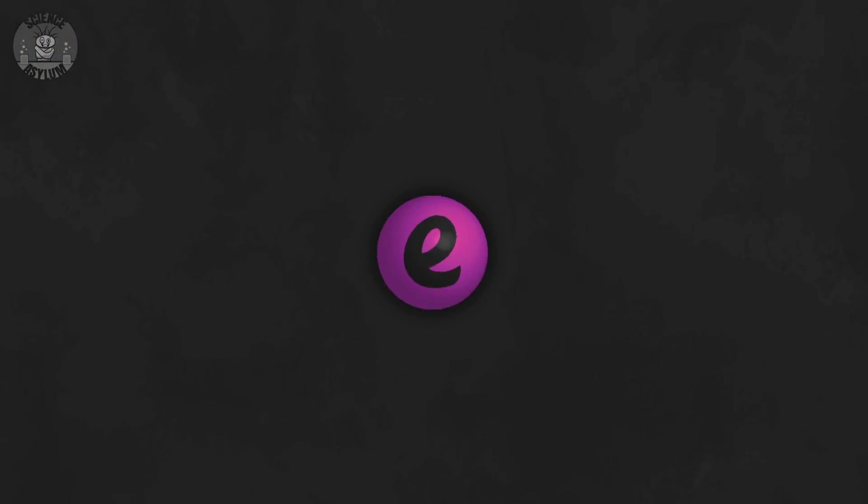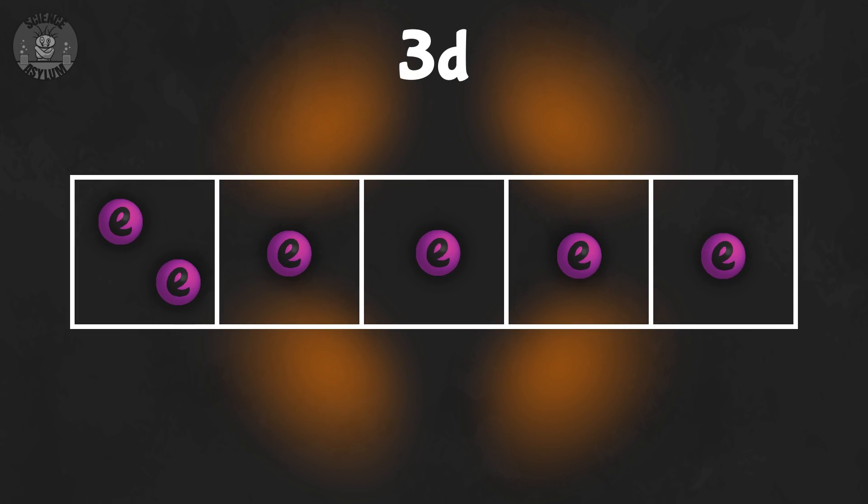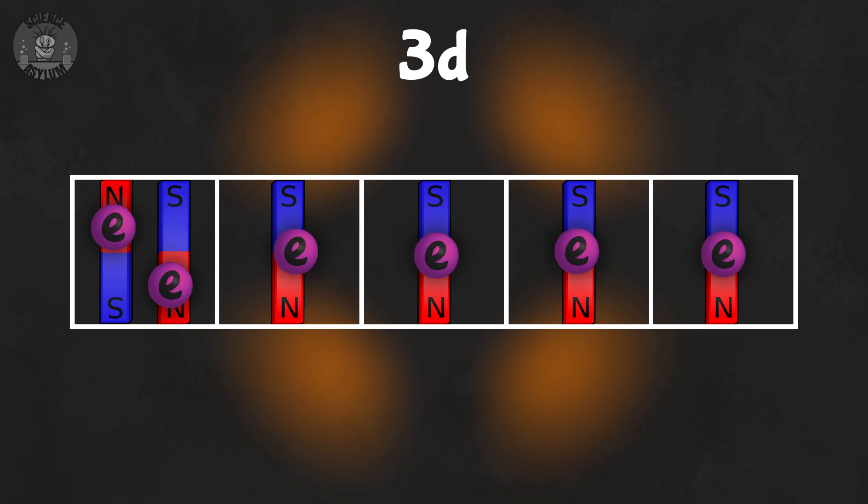When you zoom back out to the atomic level, most of those electrons still pair up and cancel, except four of them. Because like charges repel, they get as far from each other as possible and line up in the same direction, at least in iron. The more of those loner electrons an atom has lined up, the more magnetic it's going to be.